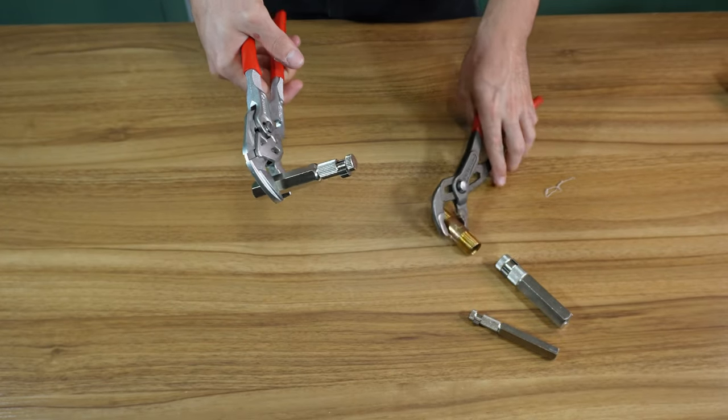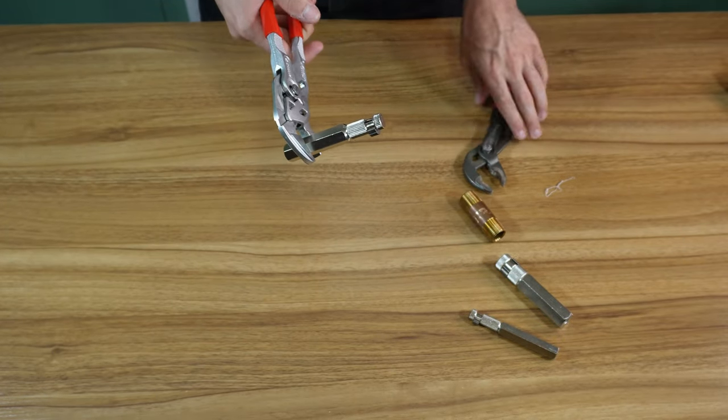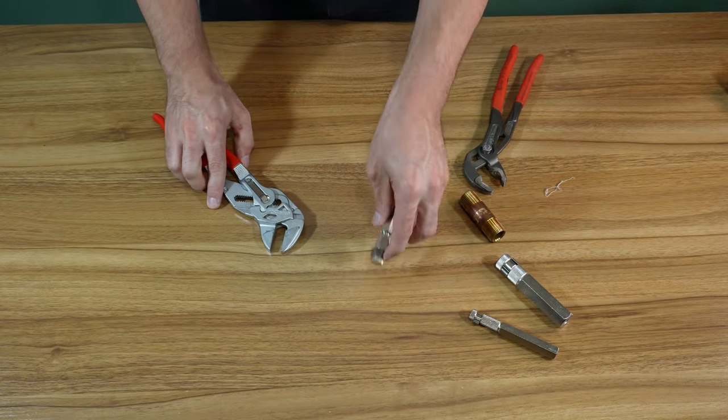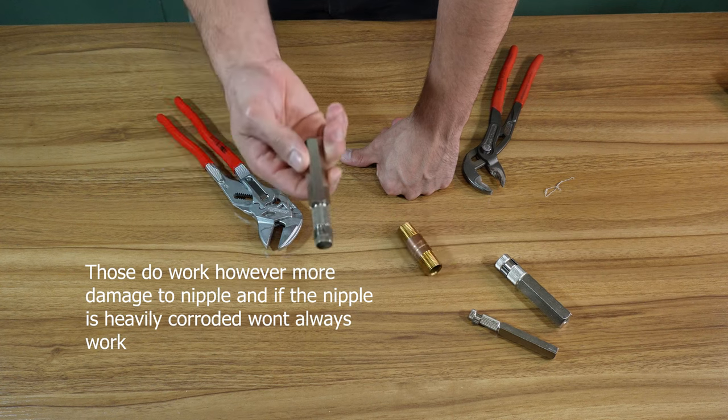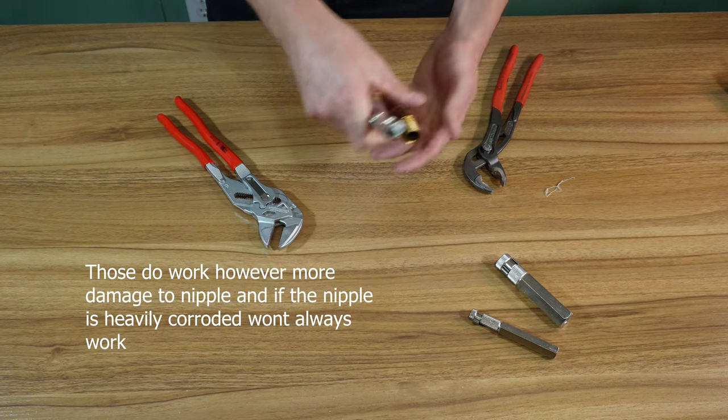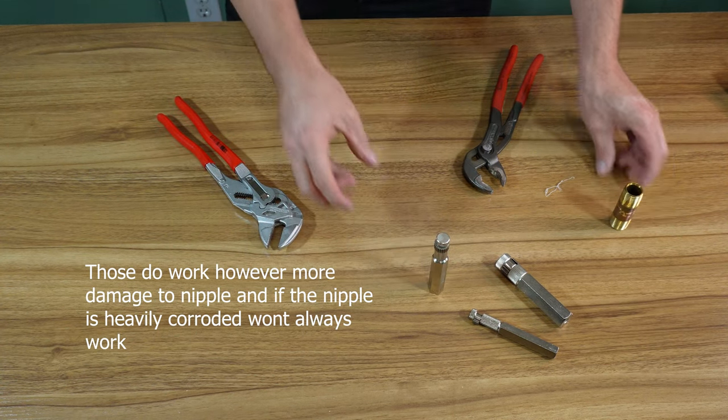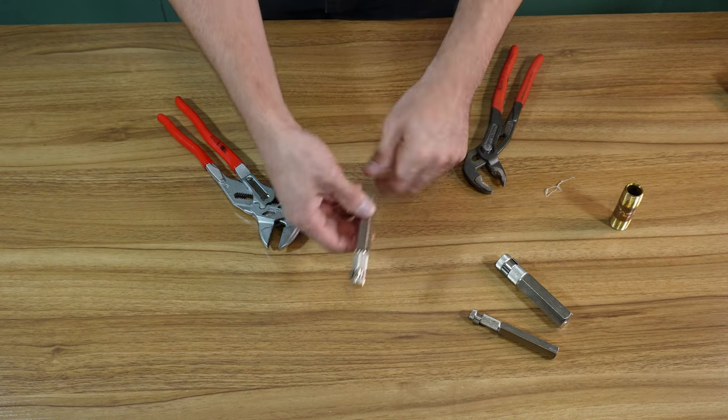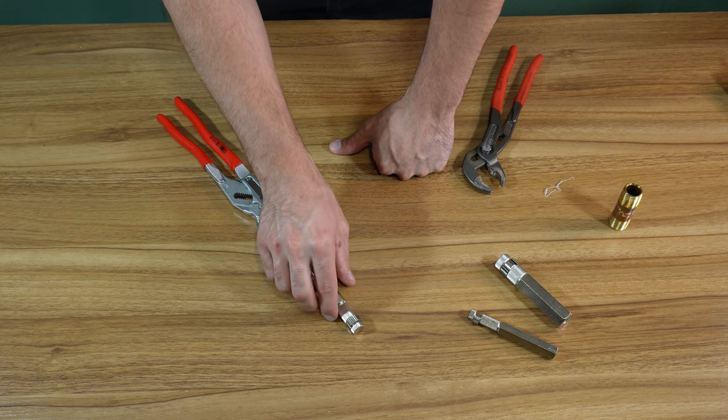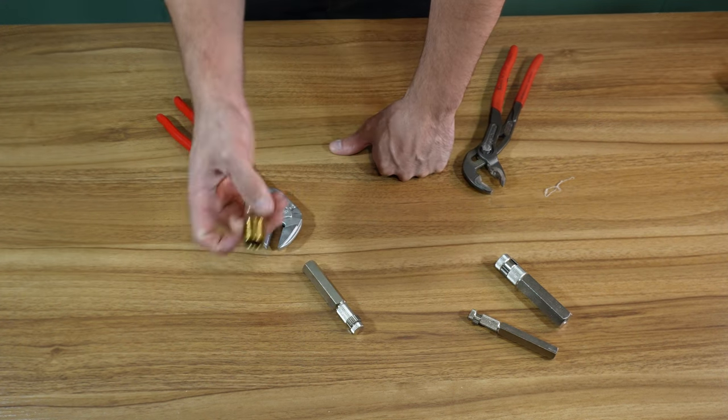I haven't had a chance to use these yet. I've used a bunch of regular extractors. Those seem to work good, the ones that just have the splines on them. You just tap it into your nipple or whatever and you can spin it. Like I said, this is the one I'm going to probably keep with me all the time. I'll throw these in the van. But they're good for installing, obviously, too.